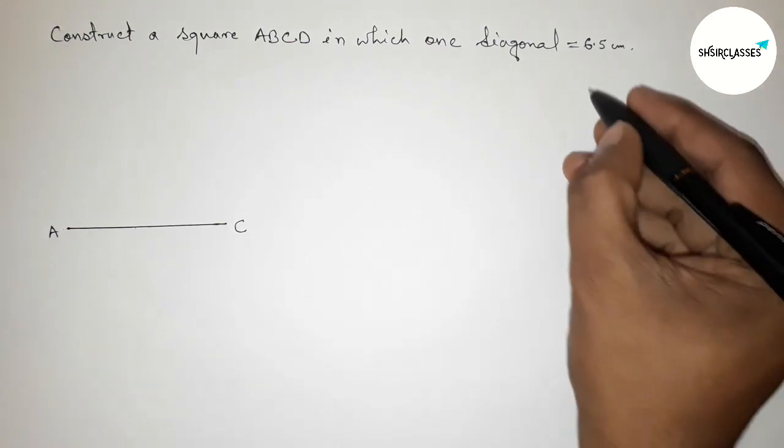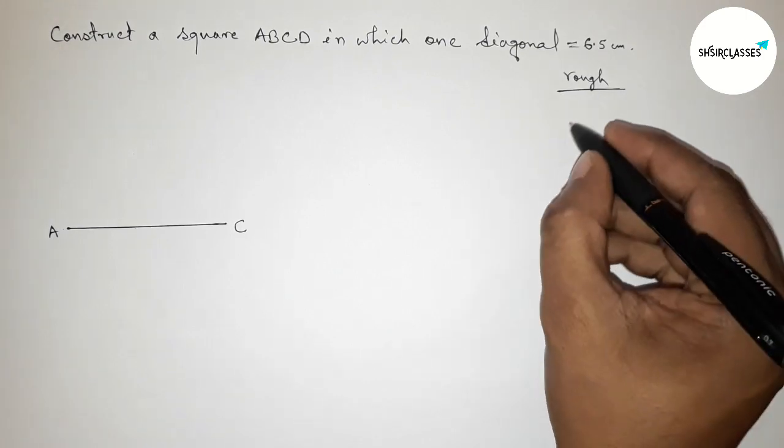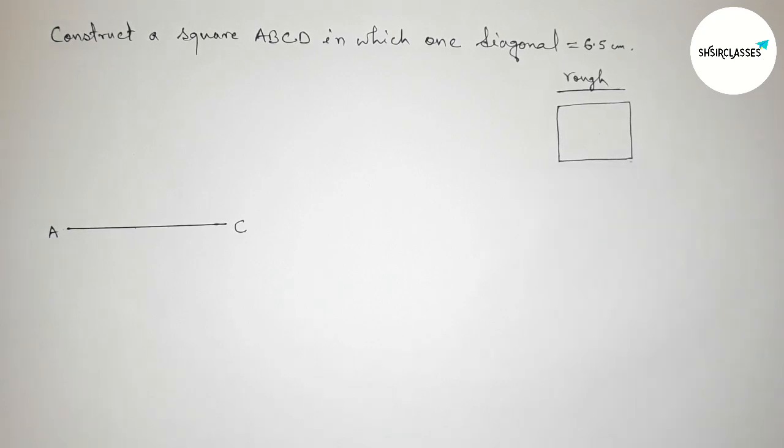Now taking here point A and here C, so the line AC is equals to six point five centimeter.